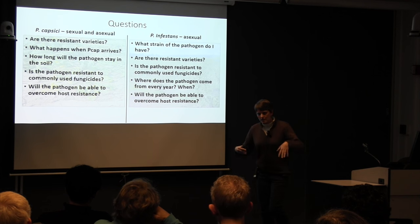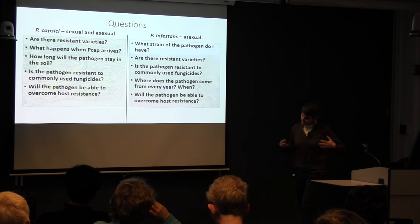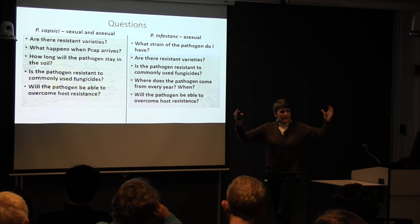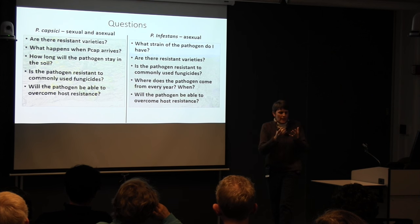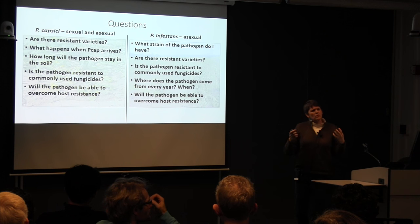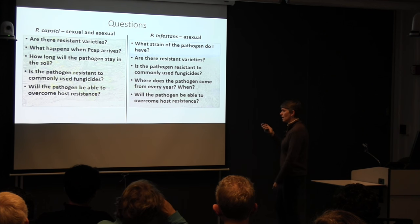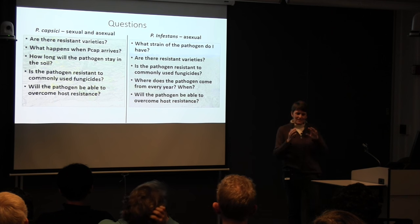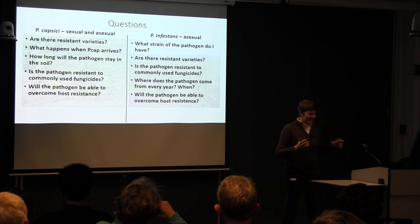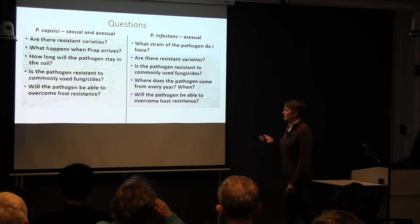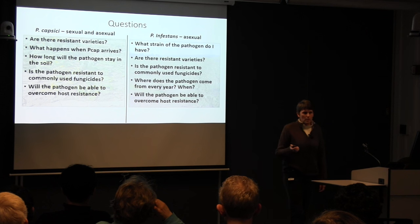With Phytophthora infestans, the common questions are: what strain do I have? — because we have these asexual clonal lineages, people want to know what strain they have, since that tells them whether it prefers potato or tomato and what fungicide resistance is likely. Are there resistant varieties? Where does the pathogen come from every year? With Phytophthora infestans, sadly there is a very long history of the pathogen relatively quickly overcoming host resistance.